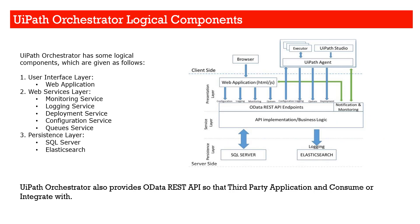Let's look at the architecture of UiPath Orchestrator and its logical components. UiPath Orchestrator has several logical components. The first is the user interface — the web application we access using a browser. Then there is a web services layer with different services running: monitoring services, logging services, deployment services, configuration services, and queue services. These services interact with different components of the system.